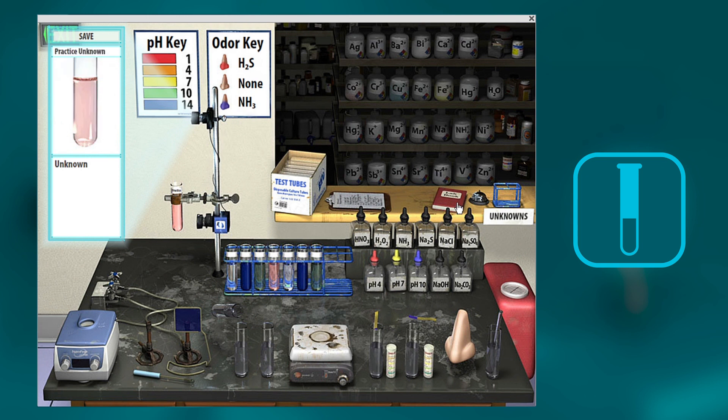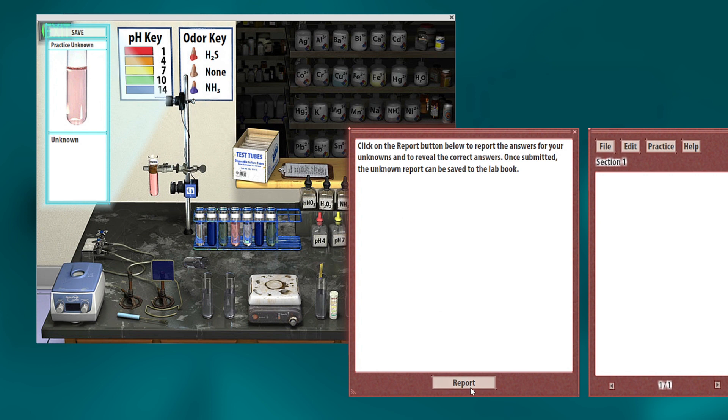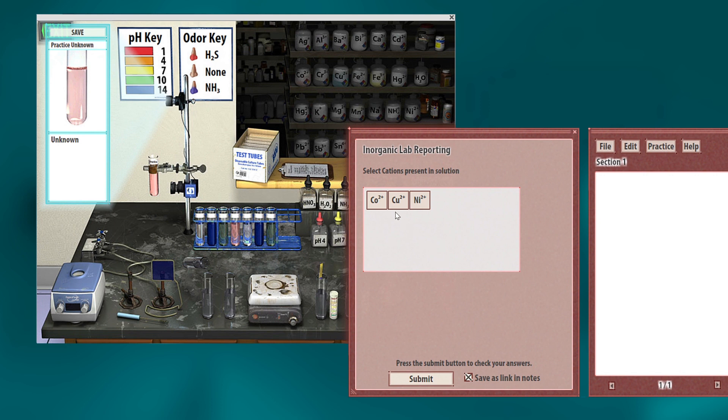So then what I do is I go into the lab book here. And based on what I have determined that I have in that unknown test tube, I think I have actually all three. I didn't expect to, but I do.